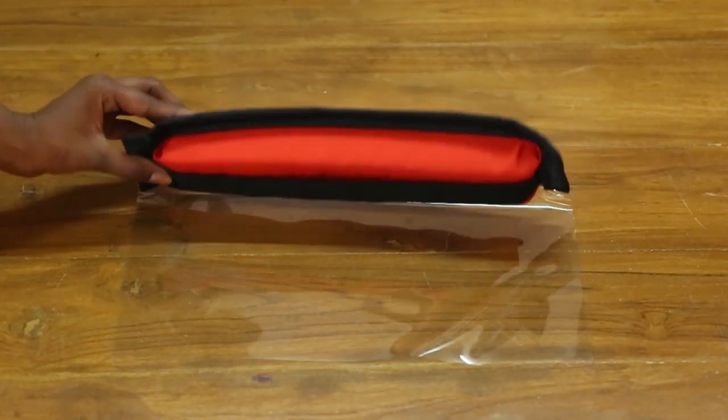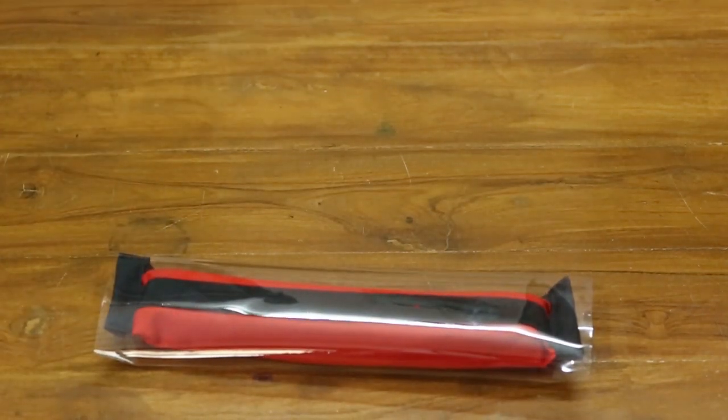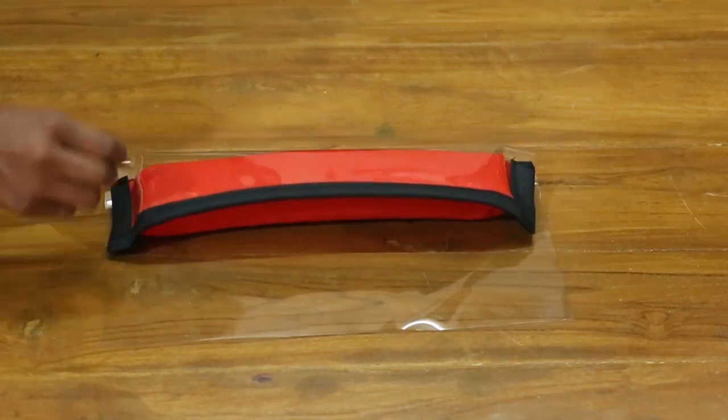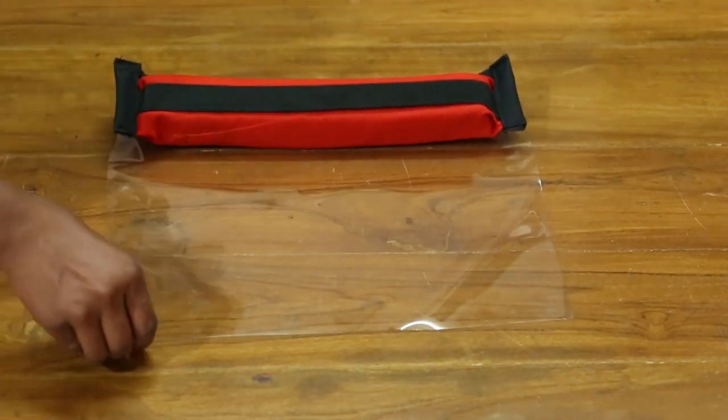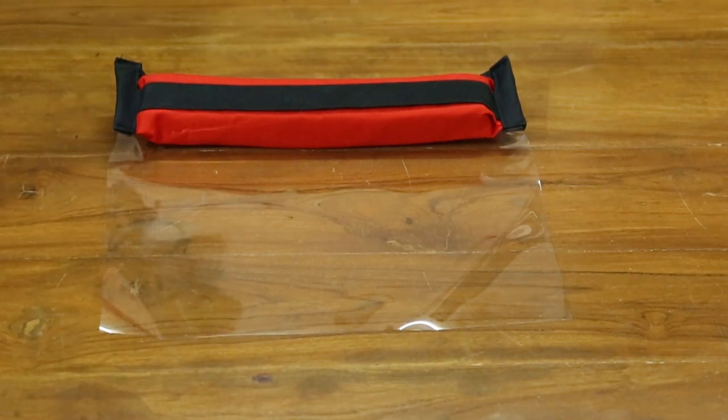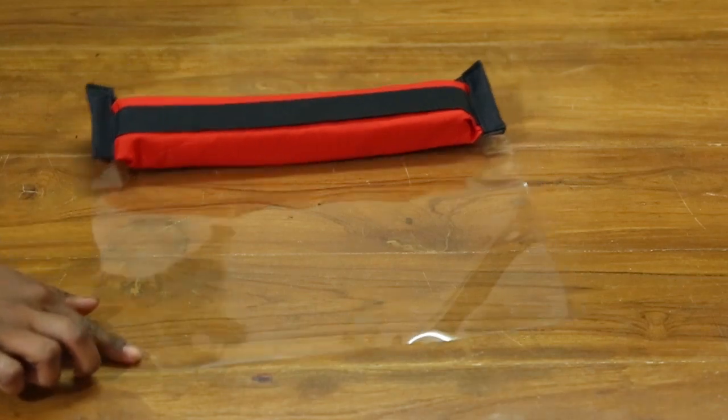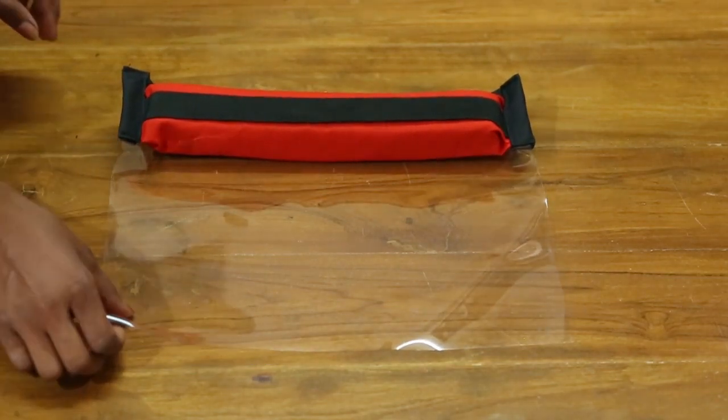These face shields are made up of flexible material which can be folded across its length. When the sheets are unfolded they come back into their original shape. As you can see in the video, we are trying to crease the shields but it will not happen.